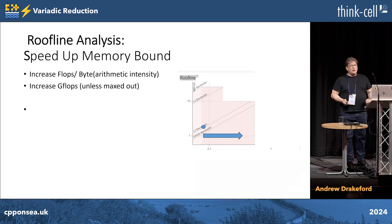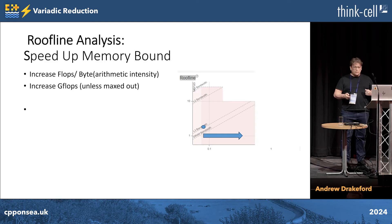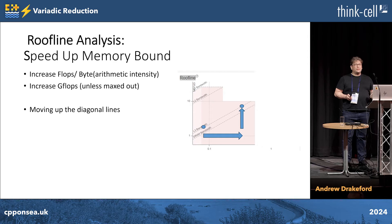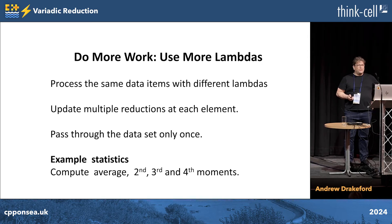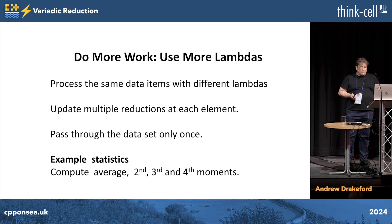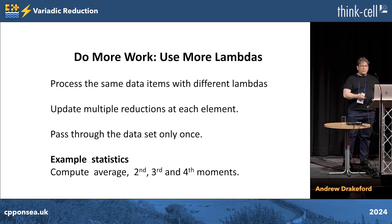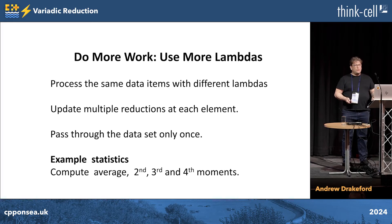Moving to the right on the plot means we're memory bound and getting more flops per byte, and that's going to get us more flops overall. So how are we going to do this with reduction? If viable, we're going to try and use more lambdas in the reduction — we're going to need to do more useful work. This way we can pass through the data set only once. For an example, we're going to use computing multiple statistics from a data set.